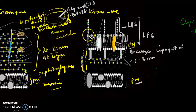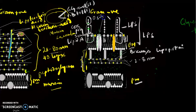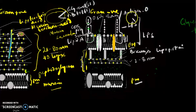This lipopolysaccharide has three parts: the inner part is called Lipid A; the middle part is called the core polysaccharide; and the outermost part is called the O side chain or O antigen, which is also made of polysaccharide but is highly variable. It is this O antigen that gives each gram negative bacterial cell its antigenic property, which differs from serotype to serotype.